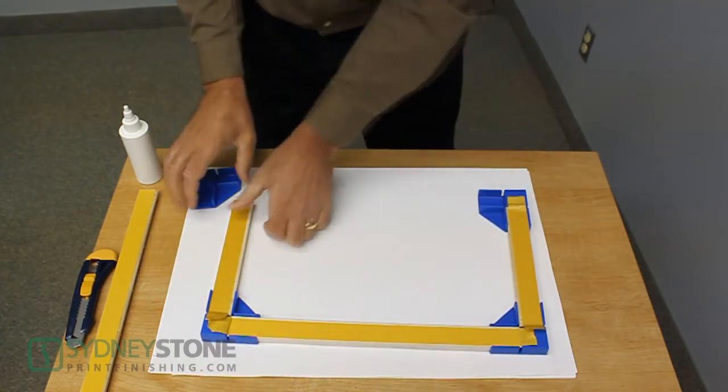The frame pieces only fit into the corner brackets in one position due to the slotted keyways in the frame pieces and in the corner brackets. This ensures that the frames are put together properly every time.